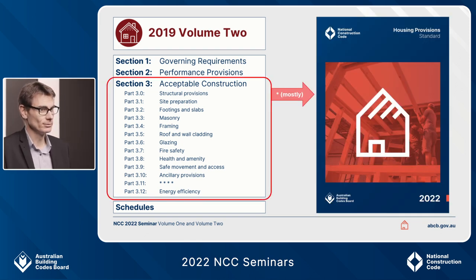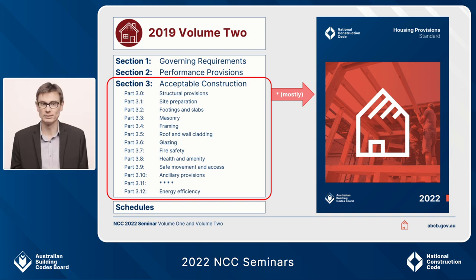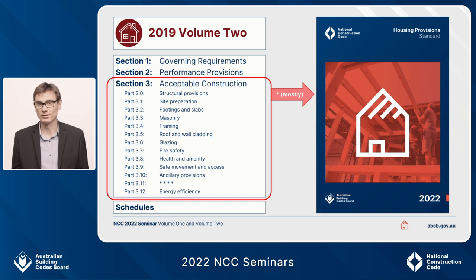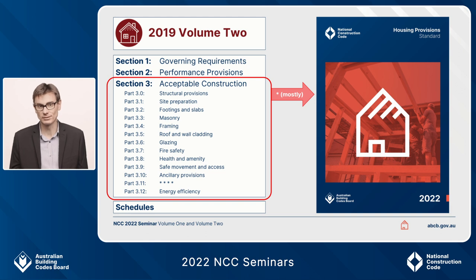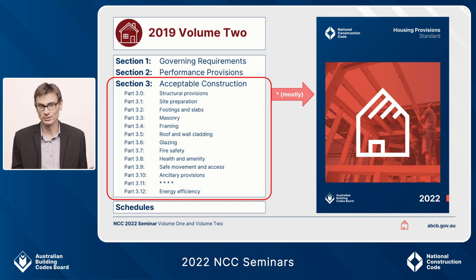For 2022, most of the acceptable construction practice has been picked up out of Section 3 and transferred into a new ABCB reference document, the ABCB Housing Provision Standard. Think of this as being like a reference standard, similar to an Australian standard — it's not in the NCC, but it's called up by the NCC. We already have three ABCB reference standards: the Protocol for Structural Software, the Standard for Construction in Flood Hazard Areas, and the standard for NatHERS heating and cooling load limits. This is our biggest one ever — it's over 400 pages.